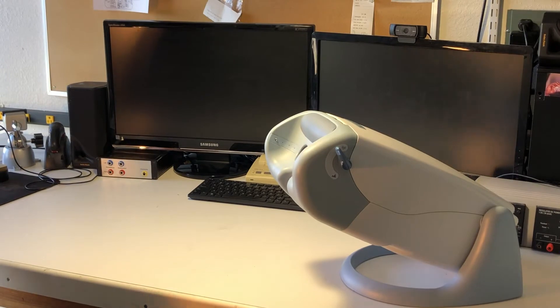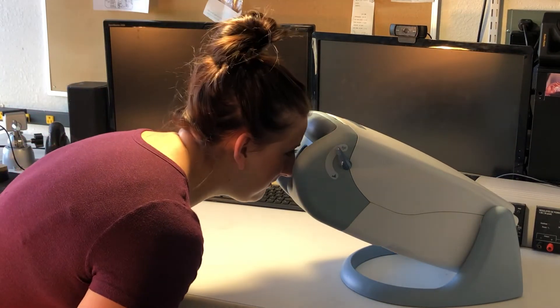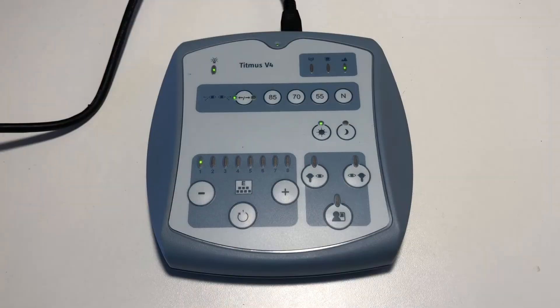Have the patient look into the vision screener. You will know they are in the correct position when the lights on the bottom right of the control panel light up.